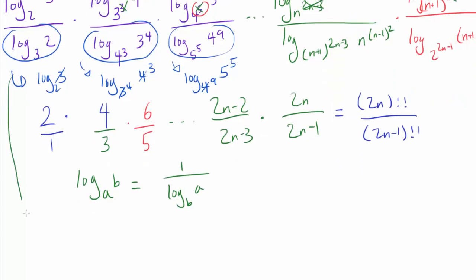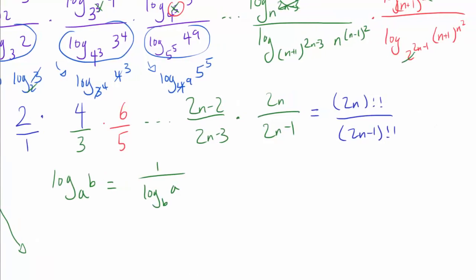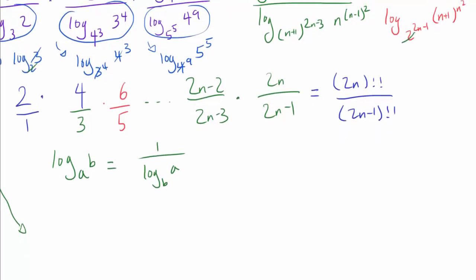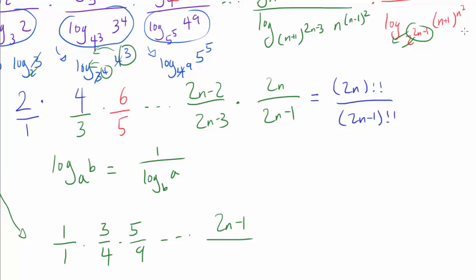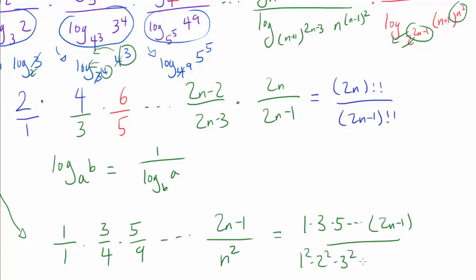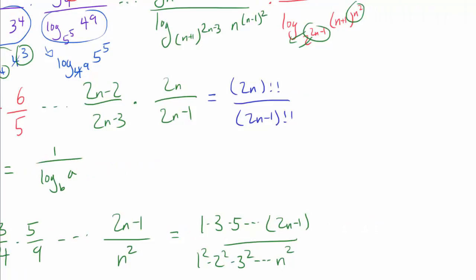In the end the 2s cancel out, leaving log base 2 of 2, which is 1. So we only need to look at the exponents again. The exponents contribute: 1 over 1, then 3 over 4, then 5 over 9, all the way to (2n−1) over n-squared. This equals 1 times 3 times 5 times … times (2n−1), over 1-squared times 2-squared times 3-squared times … times n-squared. We can simplify: the numerator is (2n−1)!! and the denominator is (n!)².